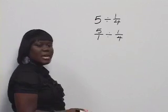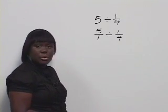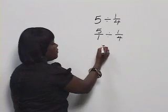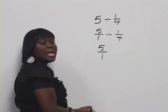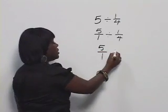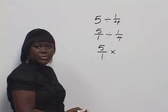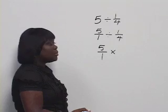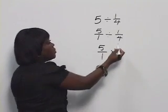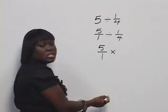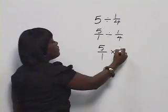Next, because it's a division of fractions, you want to change it to multiplication. We keep the first fraction the same, change our division sign to multiplication, and change 1 fourth to its reciprocal. The reciprocal of any fraction is when you flip the fraction. So the reciprocal of 1 fourth would be 4 over 1.